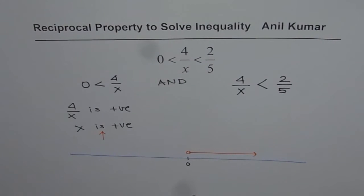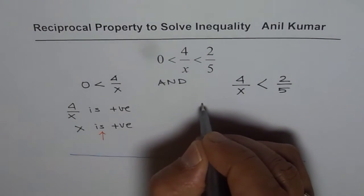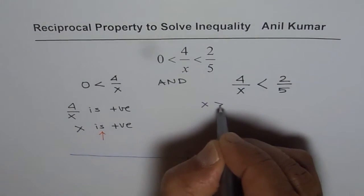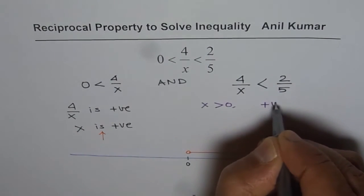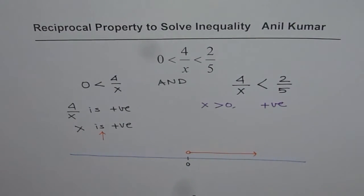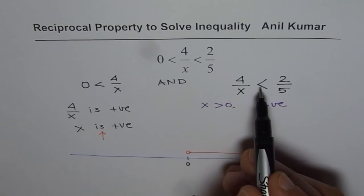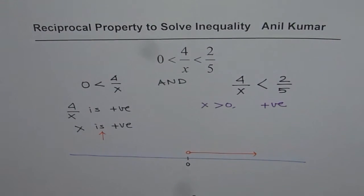Now we will solve the other half. Since x is greater than 0, that means it is positive, so we can actually cross multiply. Otherwise, if x were negative, multiplying by x would require us to reverse the sign. Since it is positive, we will not be reversing the inequality sign.